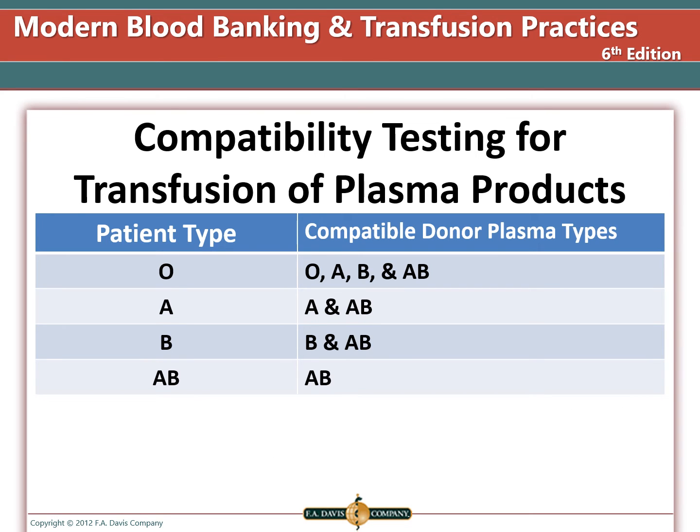This table shows the compatible donor types for each patient type. Because the O donor lacks both A and B antigens, they can receive plasma from every other type. Type A patients can receive type A and type AB plasma, while type B patients can receive type B and AB plasma. Type AB patients can only receive type AB plasma.